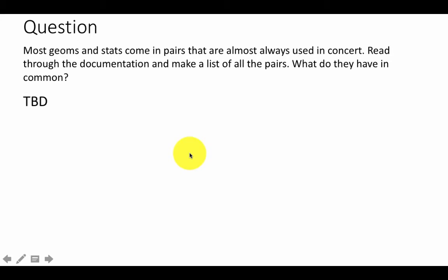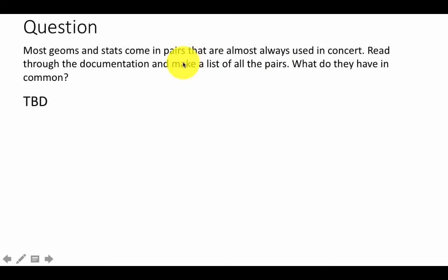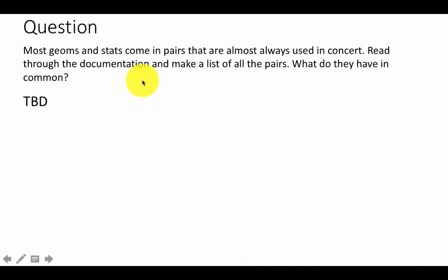As we've already said, most geoms and stats come in pairs that are almost always used in concert. That is why we don't need to worry too much about stats — we use the geoms and the default stats associated with the geoms are almost always fine. It would be a good idea to read through the documentation and make a list of all the pairs — what are all the geoms and what are all the stats associated with each geom. The type of the plot and the name of the geom have a very good correlation.